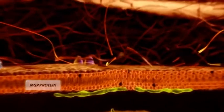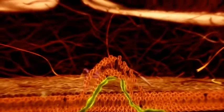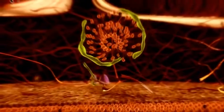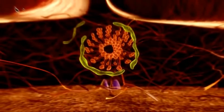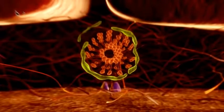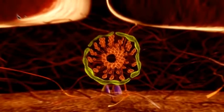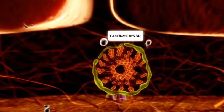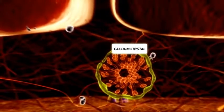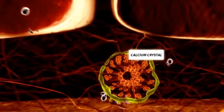MGP undergoes a conformation change due to MeniQ7 and becomes active. The active conformation can bind to negatively charged phospholipids in the cell membrane. The function of MGP is locally in the vessel wall by protecting cell membrane particles from calcification, possibly by covering them.